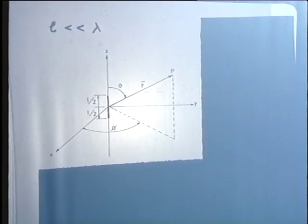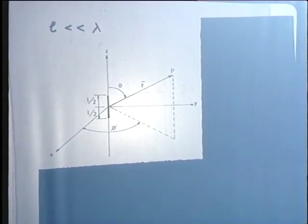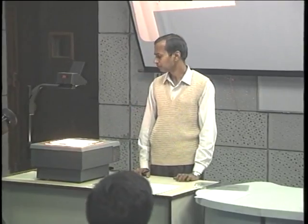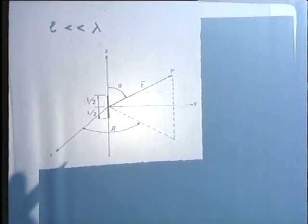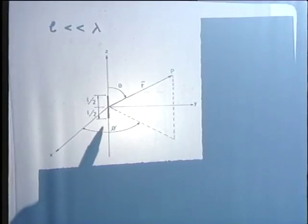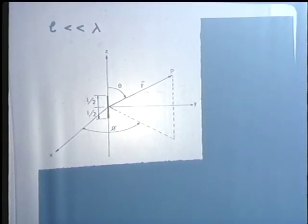Otherwise, as seen on transmission lines, the current varies in a sinusoidal fashion depending on the terminations. So if the length is very small compared to a wavelength, we can safely say the current is uniform over the entire length, which simplifies our procedure considerably. We also assume that the wire is very thin — that is, the diameter is much less than the length — which also helps keep things simple.